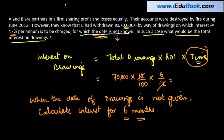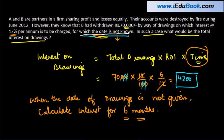This 12 will knock off this 12, and two zeros will go with these two zeros. So we are left with 700 into six, which equals 4,200. So this is the amount of interest on drawings which has to be charged. The only catch in this question was that you were not aware of the date on which the withdrawal was made. So basically, you computed interest for the average period, which is six by 12.